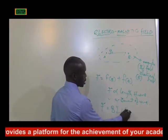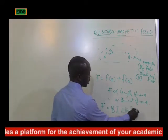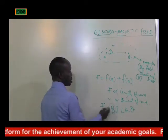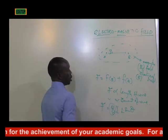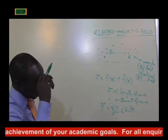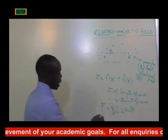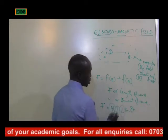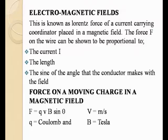I, L, sin theta. We have said all this — this is your magnetic field, your I is your current, your L is the length. Force on the moving charge in a magnetic field.